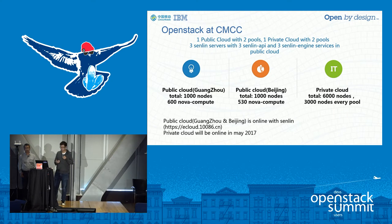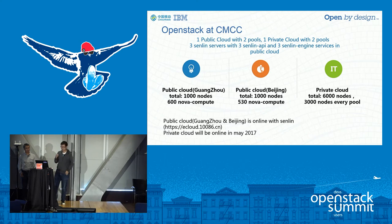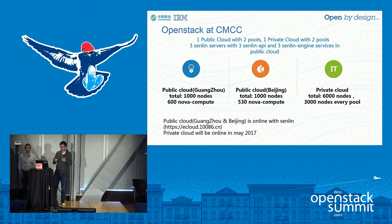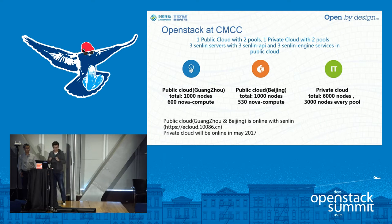We also have 17 SDN and NFV nodes. The architecture between Guangzhou and Beijing ports is the same. Our public cloud is now online with the power of Senlin. Our private cloud has two ports, each with 3,000 nodes, located in Harbin in northeast China and Hohhot in north China. We hope by mid-2017 our private cloud can be online, and we will deploy the Senlin service for our private cloud as well.